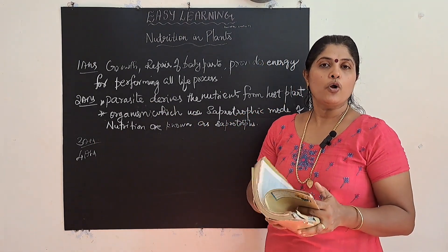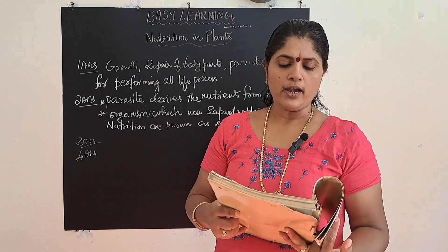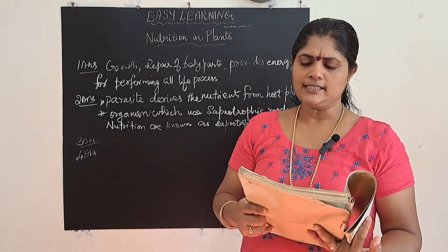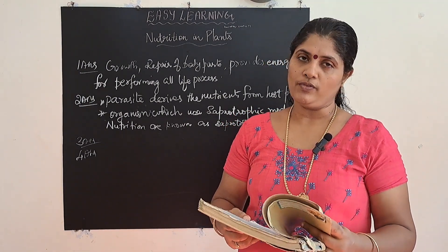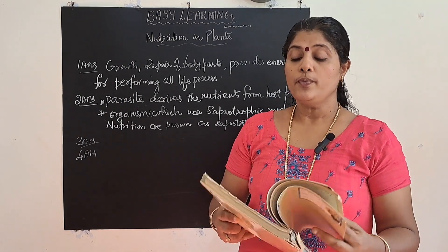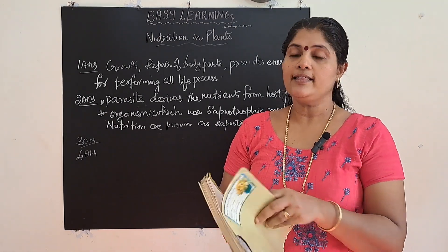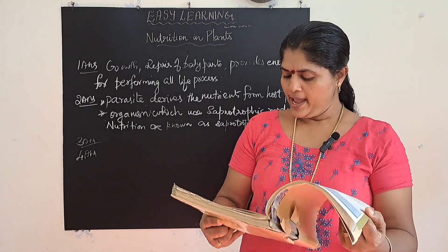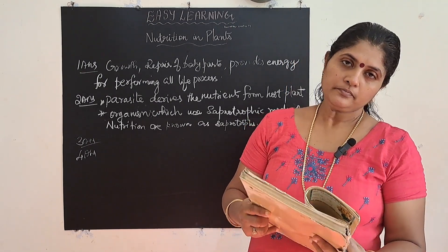The fifth question: show with the help of a sketch that plants are the ultimate source of food. That particular diagram is already there in the NCERT textbook on page number 3, figure 1.3.